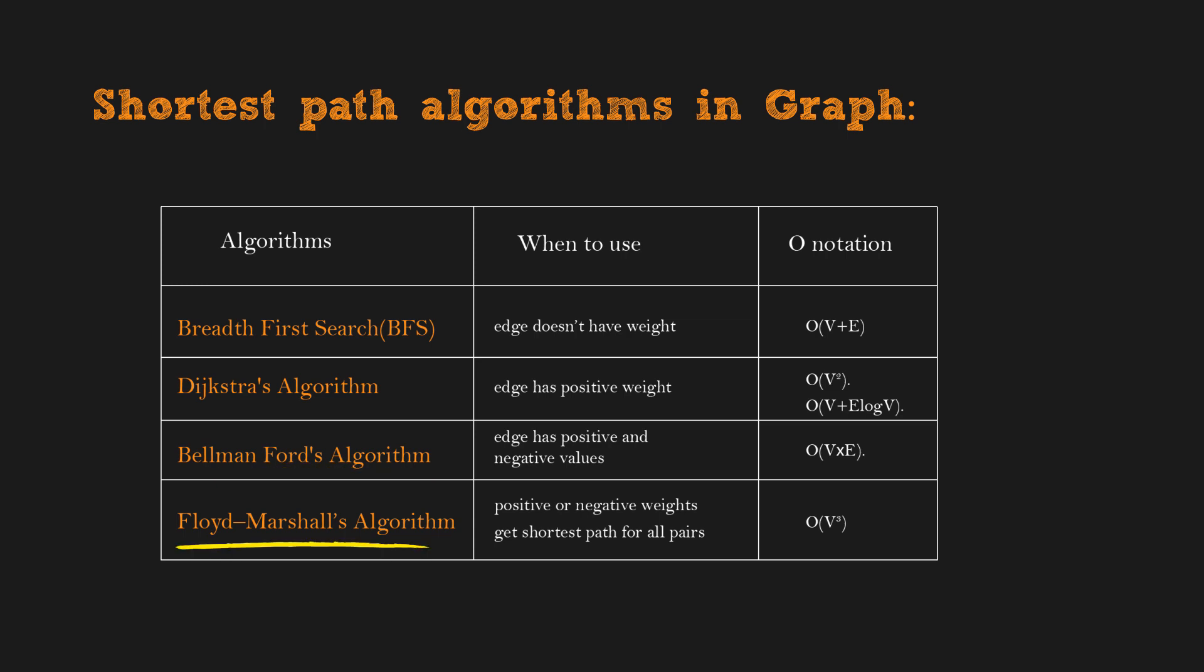Floyd-Marshall algorithm is also an algorithm used to find the shortest path in a weighted graph with positive or negative edge weights. Its advantage is one single execution will find the shortest path between all pairs of vertices. The time complexity is the highest, O(V³). Today, we will focus on Dijkstra's algorithm.